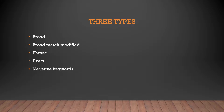Generally there are three keyword types: the first one is broad match, the second one is phrase match, and the third one is exact match. There is also something called broad match modified, which sits somewhere in between broad and phrase match. Finally, we will also be talking about negative keywords, which will help you streamline the quality of your traffic, improve your click-through rate, and make sure you get the maximum out of your ads budget.